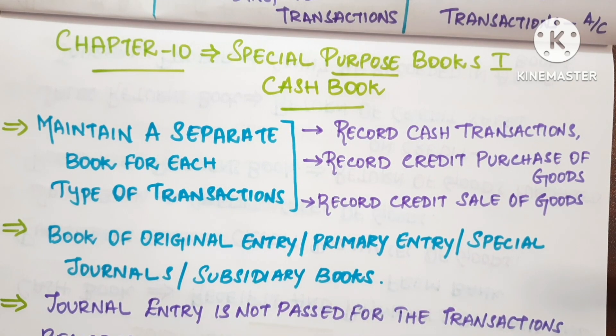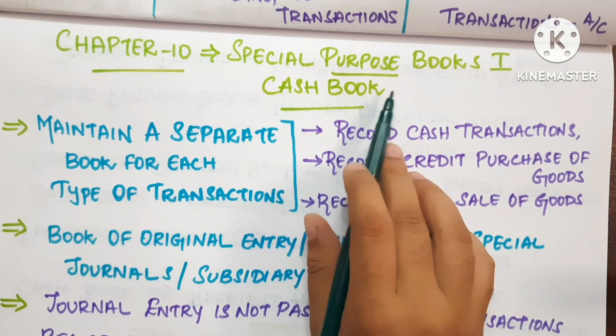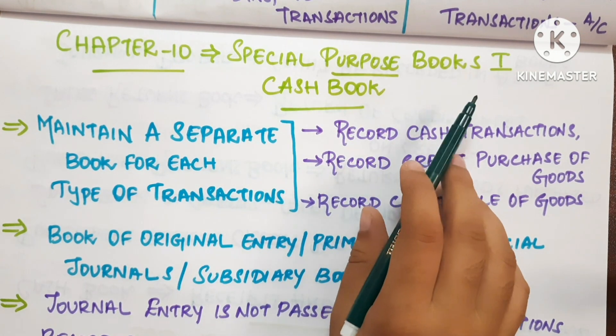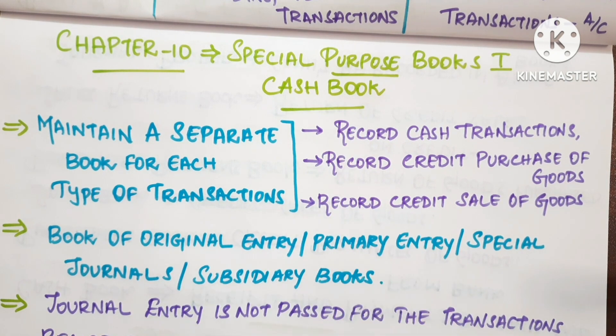Hi friends, welcome back to my channel Savvy Learner. In this video, we will talk about 11th accountancy, CBC syllabus, Chapter 10, Special Purpose Book, Part 1 - Cash Book.